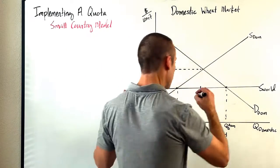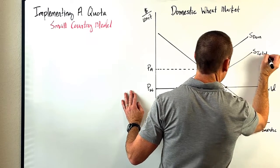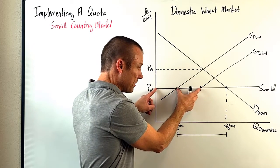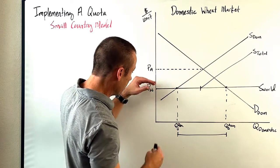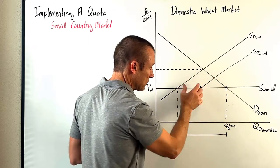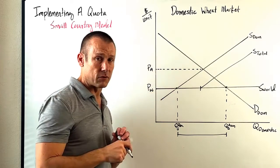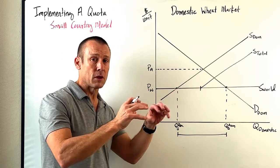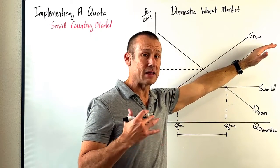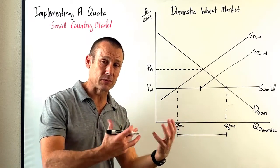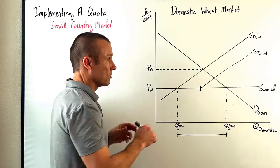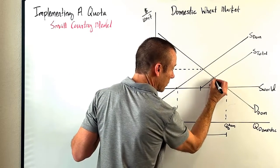That gives us a new curve on our graph: supply total. At a particular price, a certain amount is supplied by domestic producers and that quota amount is supplied by international producers. If the price went up, more would be supplied domestically plus that same quota amount from international producers. Basically, we've shifted the supply curve to the right at all price points by the amount of the quota. We're not calling this supply domestic — we just added on that international piece — so supply total has the domestic production plus the amount coming from international trading partners.